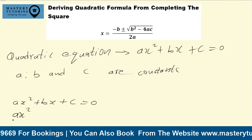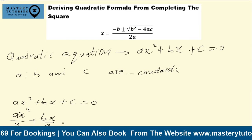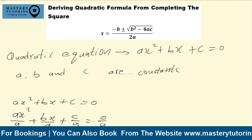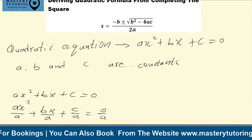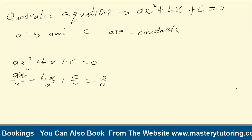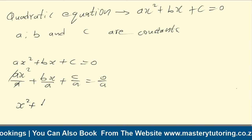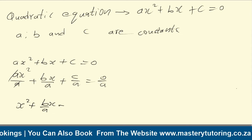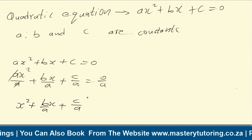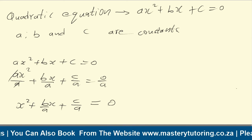This becomes ax²/a + bx/a + c/a = 0/a. The a's cancel out, leaving us with x² + (b/a)x + c/a = 0. Zero divided by any number is zero.